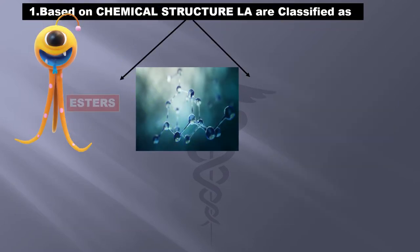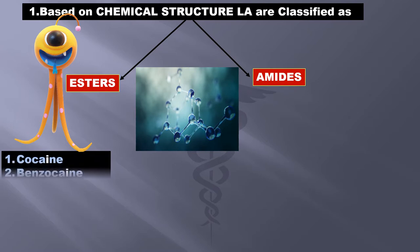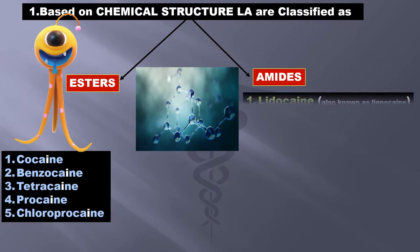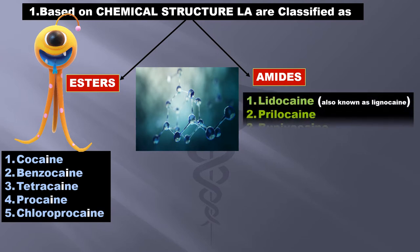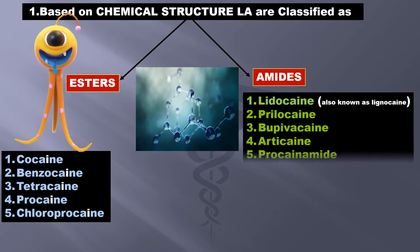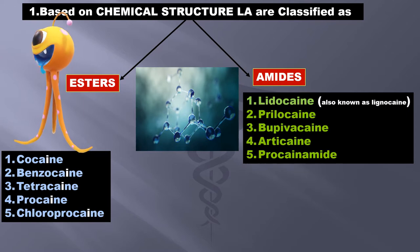Based on chemical structure, local anesthetics are classified as esters and amides. Examples of esters are cocaine, benzocaine, tetracaine, procaine, and chloroprocaine. Examples of amides are lidocaine, prilocaine, bupivacaine, articaine, and procainamide. I'm going to limit this video to these few local anesthetics.